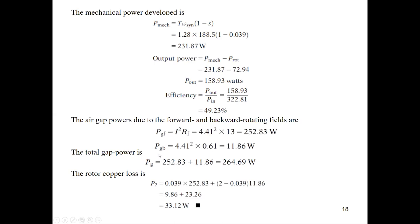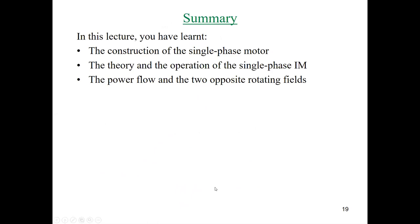To calculate air gap power: P_gap_forward = I1²·R_F and P_gap_backward = I1²·R_B, which is very small compared to P_gap_forward. Total P_gap = P_gap_forward + P_gap_backward = 264 W. Rotor copper loss: P_cu2 = P_cu2_forward + P_cu2_backward = S × P_gap_forward + (2 - S) × P_gap_backward. This gives the total rotor copper loss. Any questions about the problem?